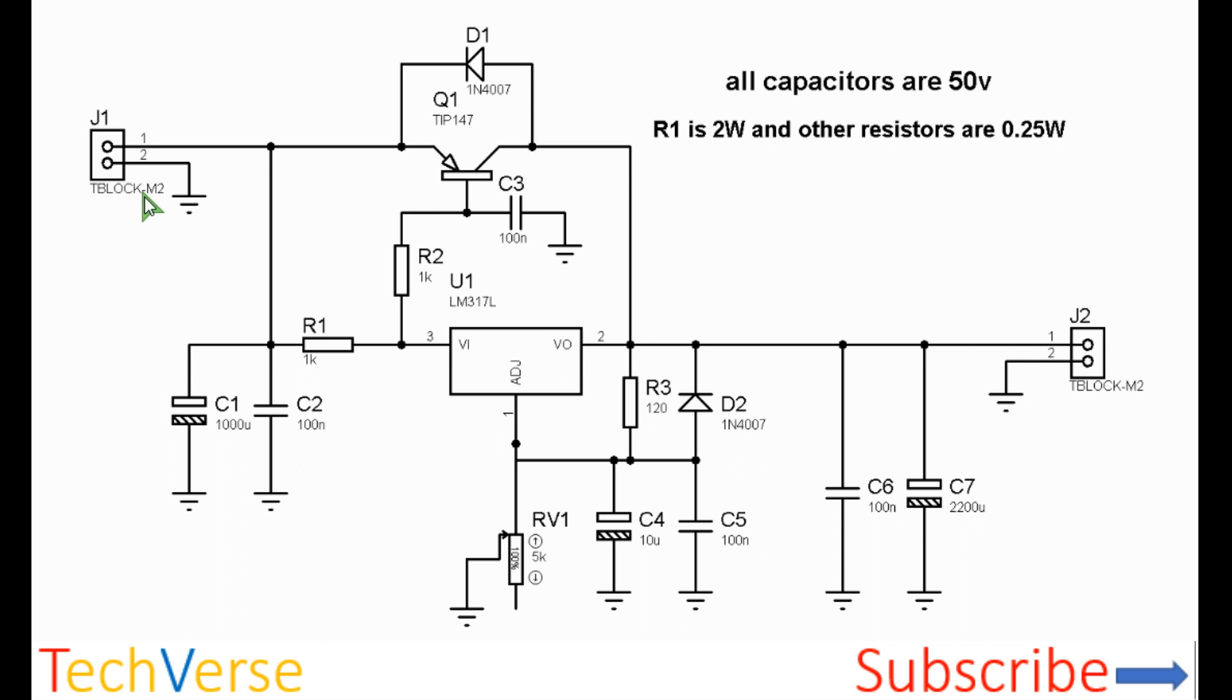You can obtain this by rectifying mains through a transformer to step it down to about 35 volts RMS, then a rectifier and an input filtering capacitor so that you have at least 40 to 50 volts at the input on the jumper J1.